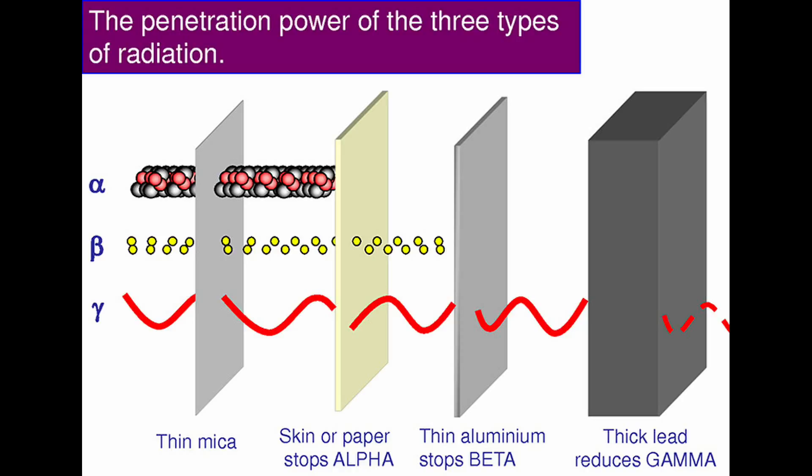There are three main types of nuclear radiation: alpha, beta, and gamma. All of these types are ionizing, which is why they are biologically hazardous.